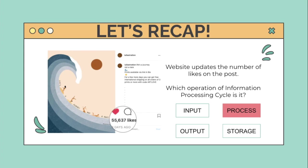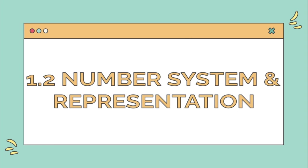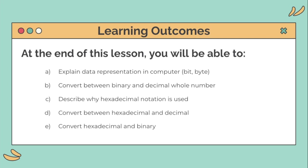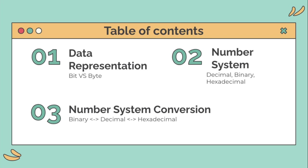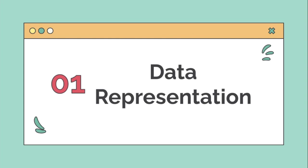Good job, guys. Next we'll learn number systems and representation, which is a subtopic of computer system. At the end of this lesson you'll be able to: explain data representation in computers using bits and bytes, convert between binary and decimal whole numbers, describe why hexadecimal notation is used, and convert between hexadecimal and decimal, and between hexadecimal and binary. In this lesson you'll cover three contents: data representation, number systems, and number system conversion.